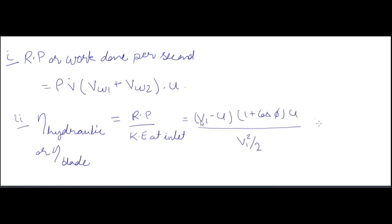Hydraulic or blade efficiency equals runner power divided by kinetic energy at inlet: [v1 minus u] times [(1 plus cos phi) times u] divided by [v1 squared over 2]. These are per-unit-mass terms, obtained by cancelling the rho times v-dot term from numerator and denominator. The volumetric flow rate v-dot equals area of cross section times v1, where A is the nozzle area and v1 is the jet velocity.